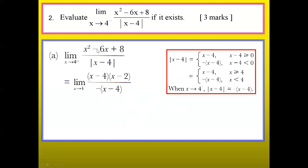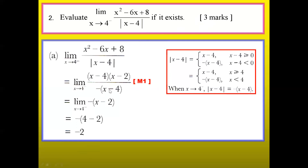You factorize the top portion of the question, and you notice you can clear away x minus 4. You will end up with only negative x minus 2, and this minus will turn to positive when you open the brackets. Now put in the number — notice when x approaches 4 the limit sign disappears — and you can calculate the answer easily. Three marks for this question: one mark for choosing the correct value of x minus 4, one mark when you put in the number, and the third mark for the final calculation.